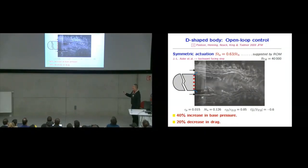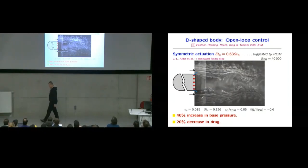Of course, you learn it in hindsight. So if you actuate with a frequency which is slightly lower than the natural frequency, then the flow stabilizes. And you get 40% increase in the base pressure, 20% decrease in the drag. So now you could say, I'm very happy with this open loop forcing. Where is the problem?